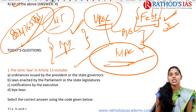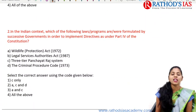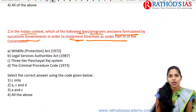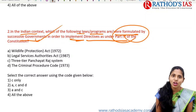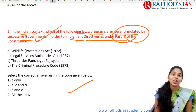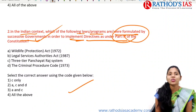Today's questions: First, the term 'law' in Article 13 — which mainly includes what? Please choose the correct option. Second, regarding DPSP in the Indian context — which of the following laws and programs formulated by successive governments in order to implement the Directive Principles of State Policy (Part IV of the Constitution) are correct? Please select the correct option and let me know your answers in the comment box. There is no negative marking here — I want to encourage you to solve as many questions as possible to get conceptual clarity. Thank you for watching — please subscribe to Rathod's RIS Academy and like, share, and comment.